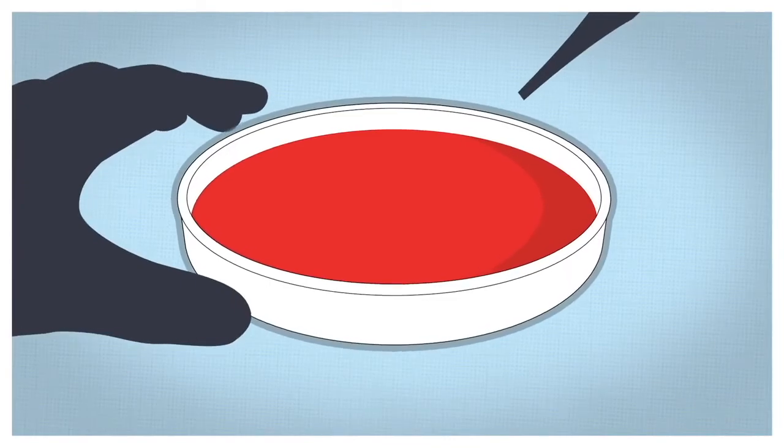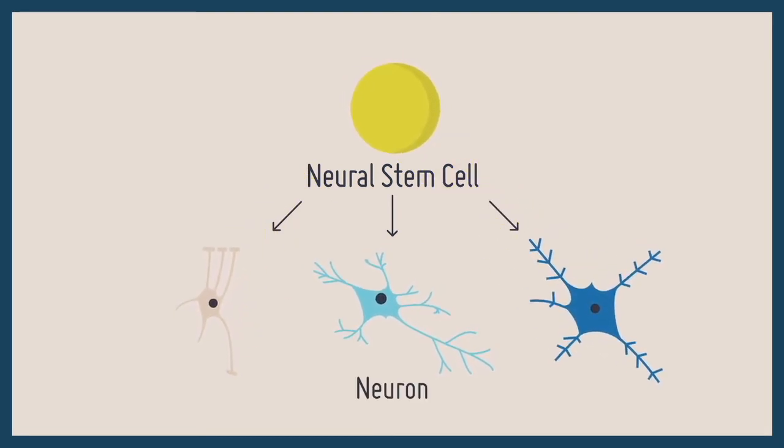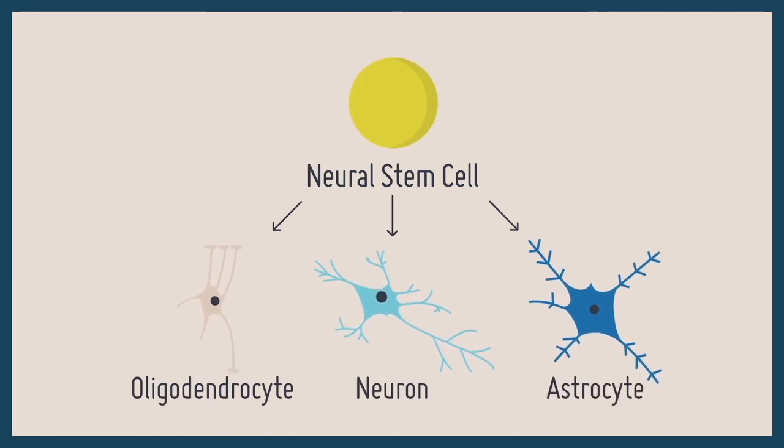That's why the discovery of neural stem cells is so exciting. They are rare, but these cells are able to generate all three nervous system cell types: neurons, oligodendrocytes, and astrocytes.